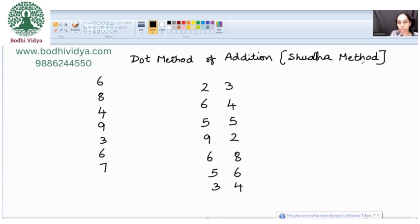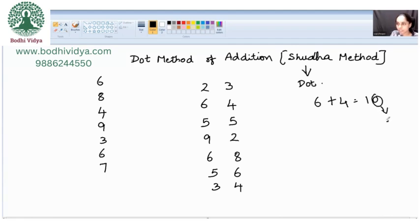In Vedic math, it's called Shuddha method. Shuddha means dot. When we add a number like 6 plus 4, we get 10. This 0 is called the end number and 1 is called the carry number. Here in this method, the carry number is represented by a dot.